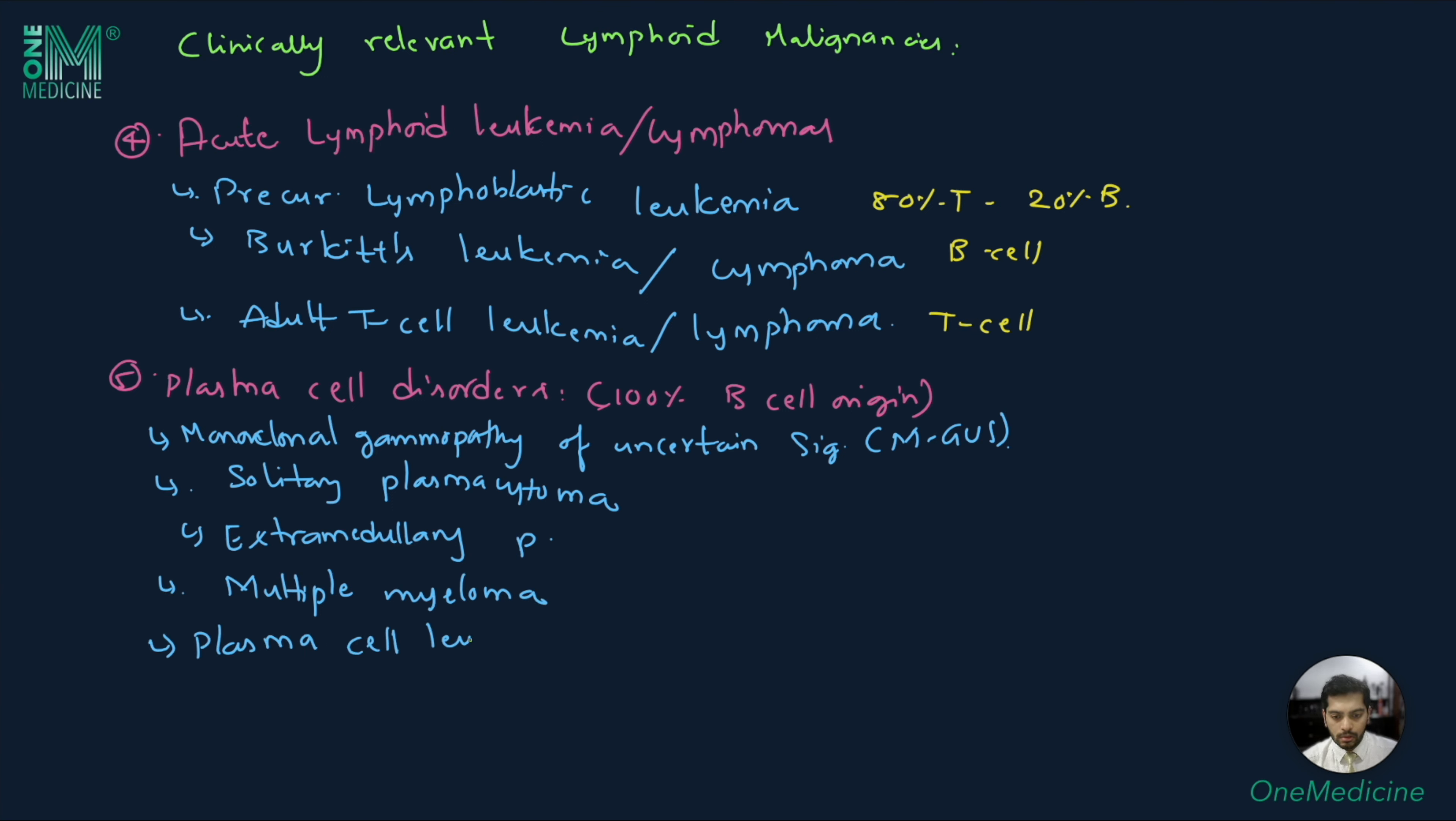Next is Hodgkin's lymphoma. These are all again B cell of origin. These include lymphocyte predominant, nodular sclerosis, mixed cellularity, and lymphocyte depleted.